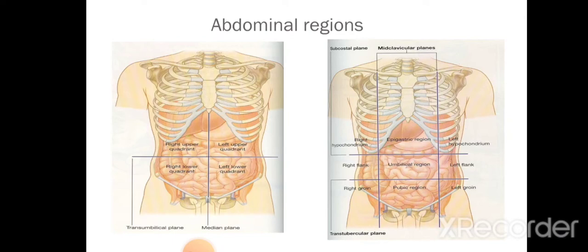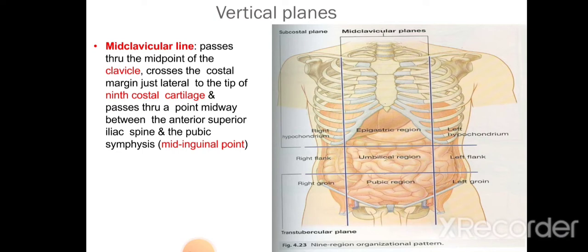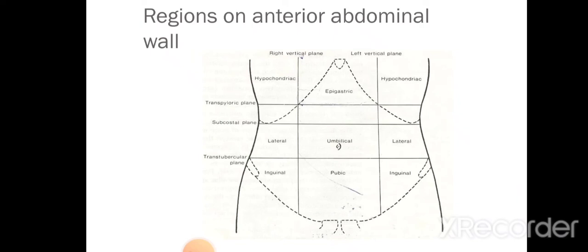The abdomen has been divided into nine regions with the help of four imaginary lines: the mid-clavicular lines, the subcostal plane, and the transtubercular plane. The mid-clavicular line passes vertically downwards through the midpoint of the clavicle, crosses the tip of the ninth costal cartilage, and then the mid-inguinal point. The subcostal plane passes at the level of L3 vertebra through the lower border of the costal margin, and the transtubercular plane passes at the level of L5 vertebra.